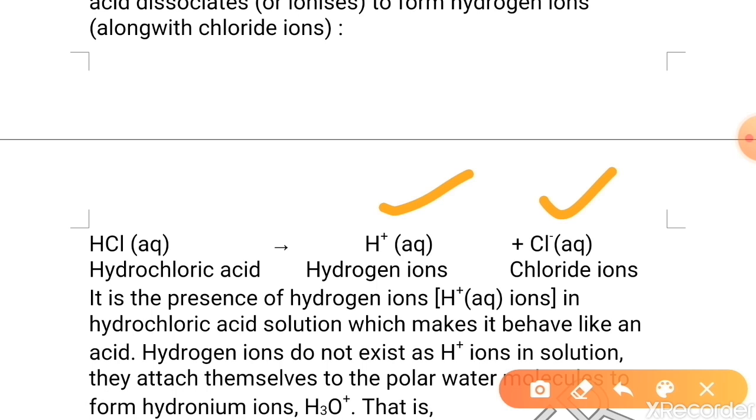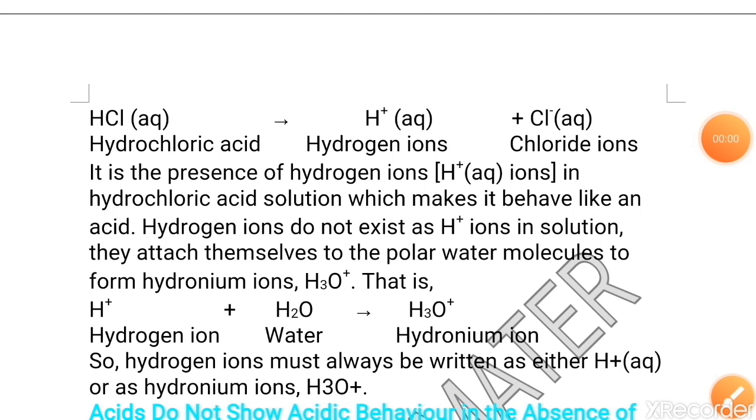Now, in presence of H+ ion, hydrochloric acid will behave like an acid. We have understood that your acid will release H+ ion in aqueous medium. But this H+ ion, this hydrogen ion is not stable.